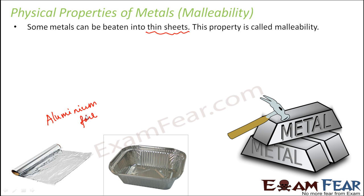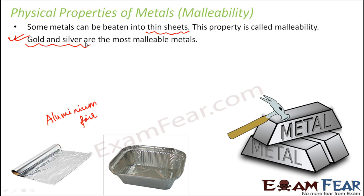This property of malleability can be seen in many metals like aluminium, silver, iron, zinc, copper, etc. However, gold and silver are the most malleable metals. Because of this flexibility, they are used to design jewellery of different shapes and designs. If you look at a gold necklace or a bangle, they are all made up of gold and have different designs — that is possible because gold can be manipulated into different shapes. So gold and silver are the most malleable metals.